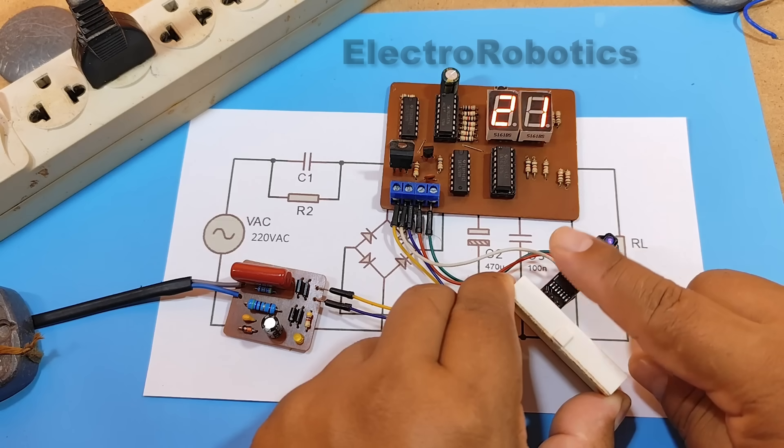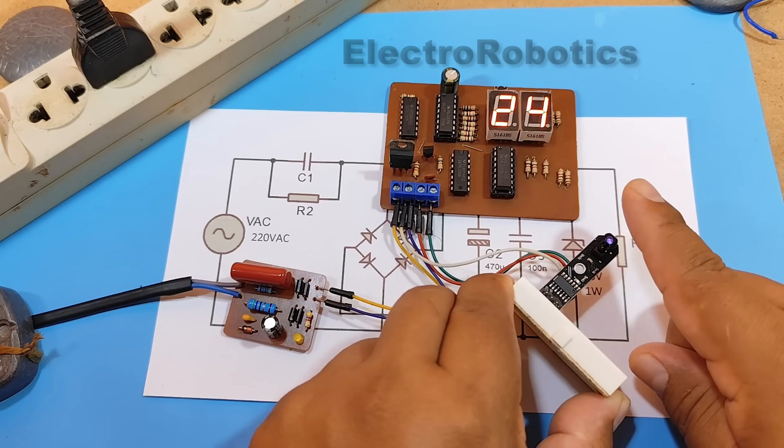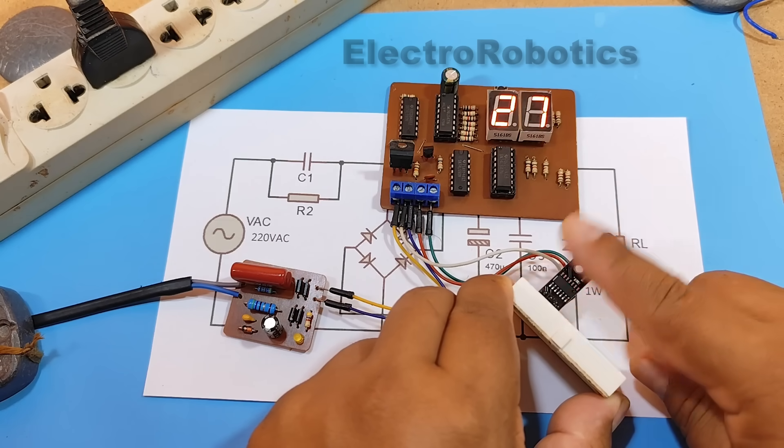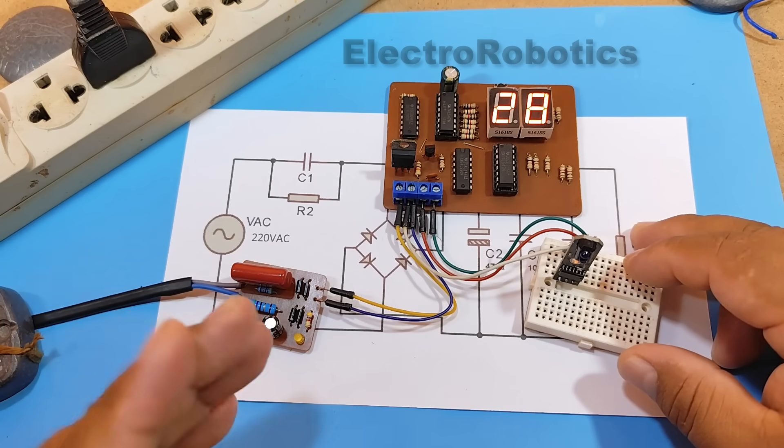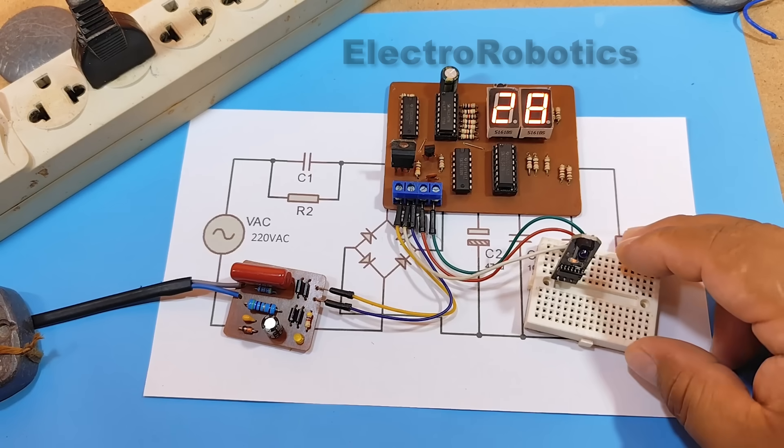And this way, you can also power your electronic boards, if they are low consumption. Right now, on this electronic board, the LED is upside down, which is why it's not working.